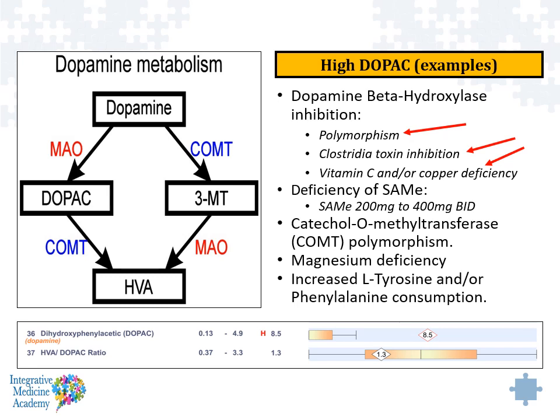There are a number of things that can influence DOPAC. High DOPAC could occur because of some type of inhibition of an enzyme called dopamine beta-hydroxylase. Three different examples include: a polymorphism in dopamine beta-hydroxylase, clostridia toxins from clostridia bacteria, and vitamin C and copper deficiencies. A polymorphism in the catecholamine-O-methyltransferase enzyme could also cause DOPAC to rise, as can magnesium deficiencies and increased intake of L-tyrosine and L-phenylalanine as amino acids.